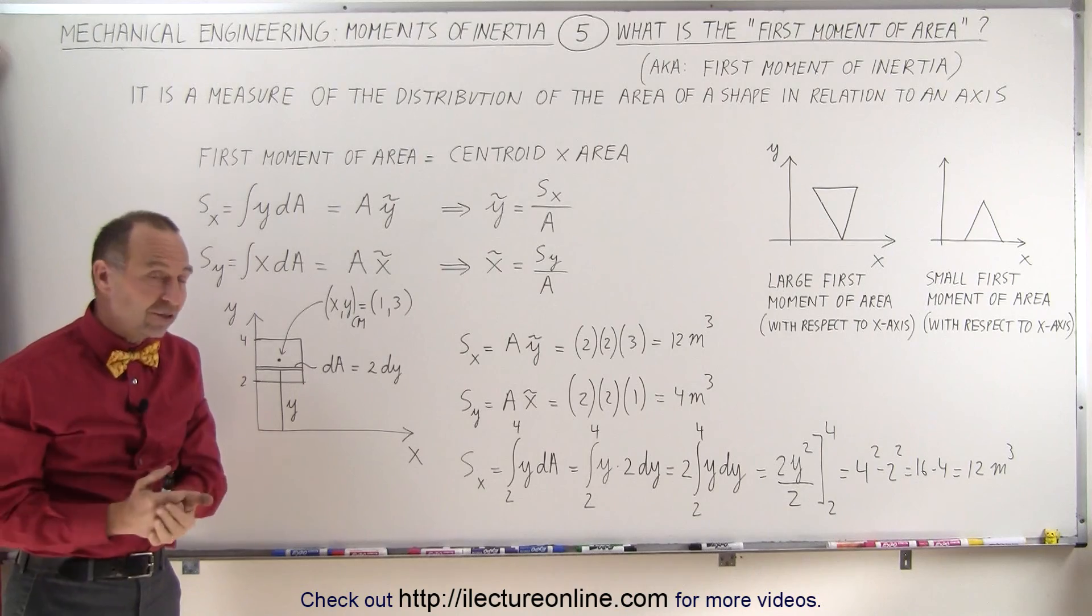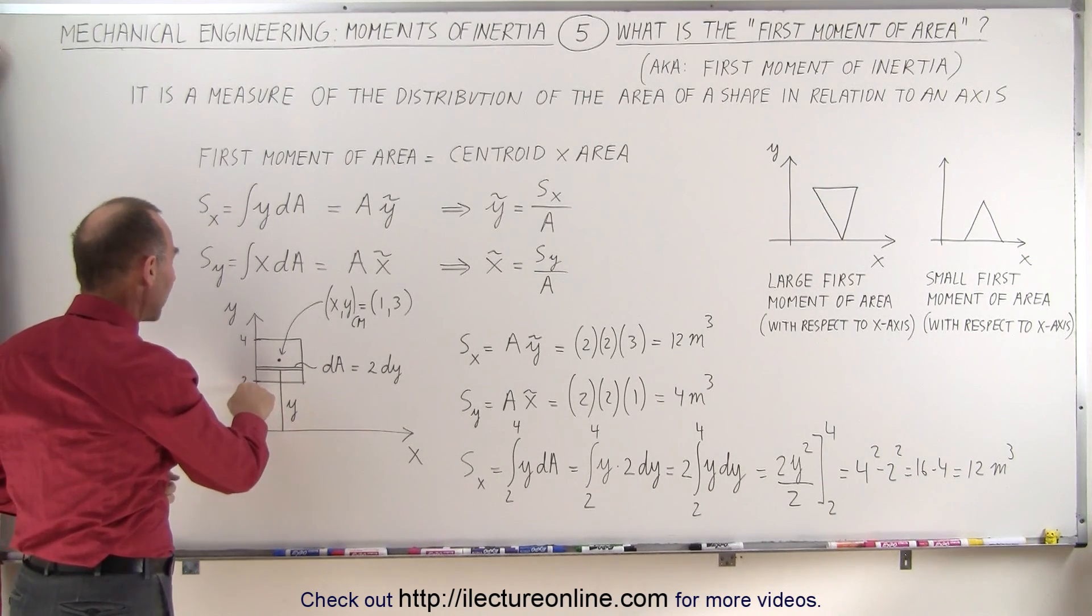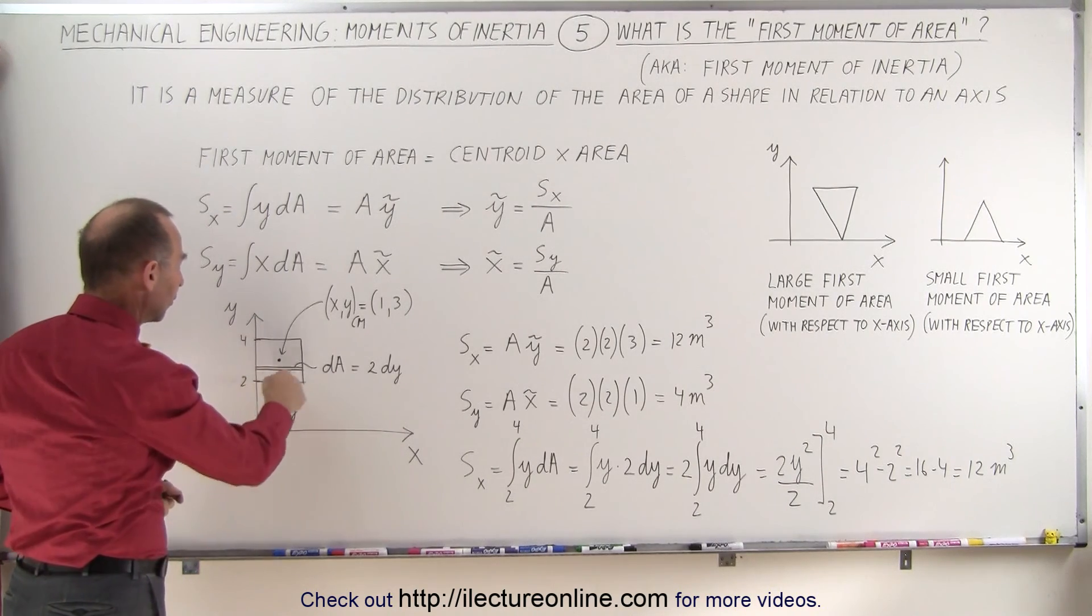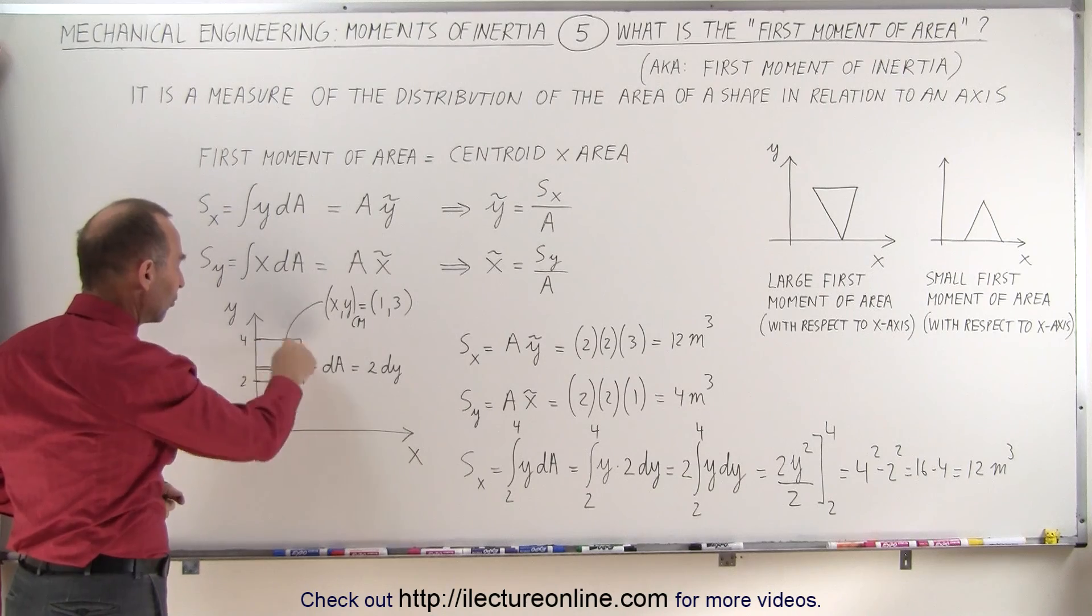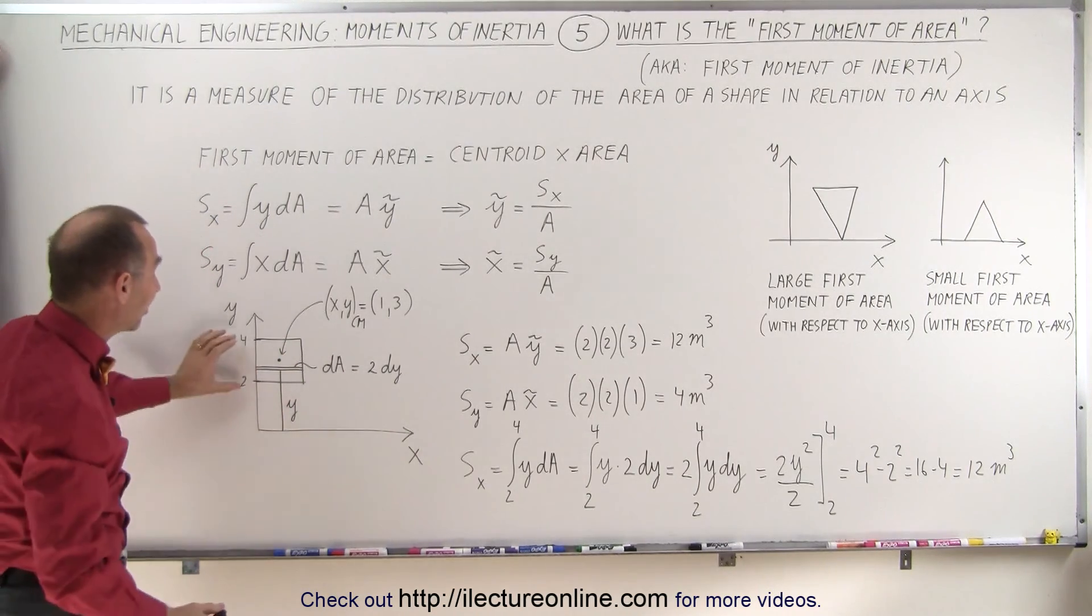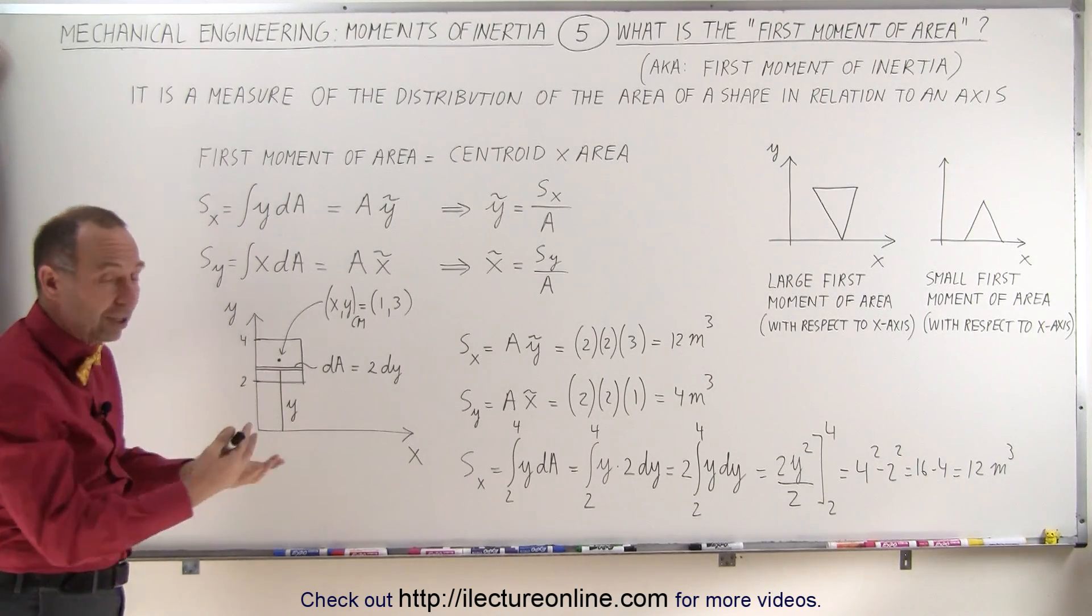Now here's a small example. Let's say that we have a small area here that starts at y = 2 to y = 4 and from x = 0 to x = 2. So you can see that the area of this rectangle - I should say square because it's equal sides - is equal to 2 times 2 or 4 square meters.